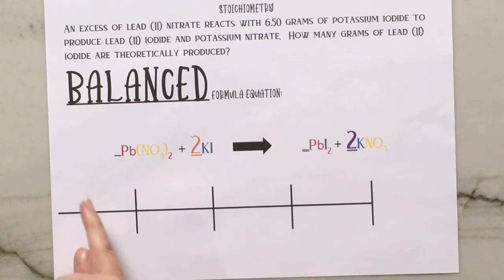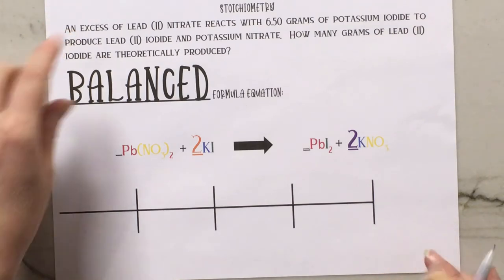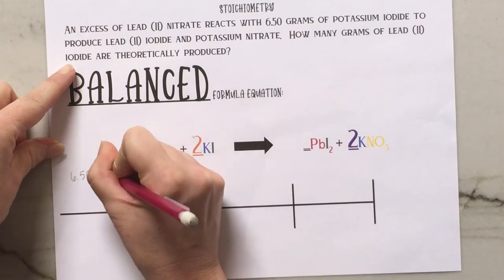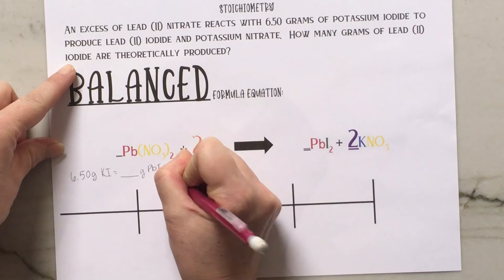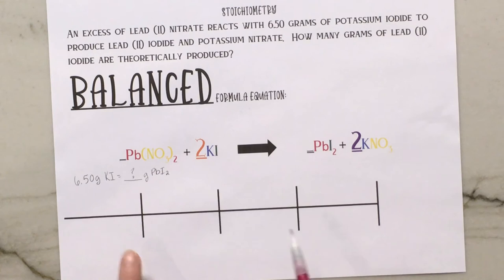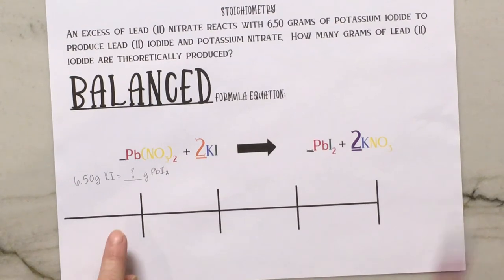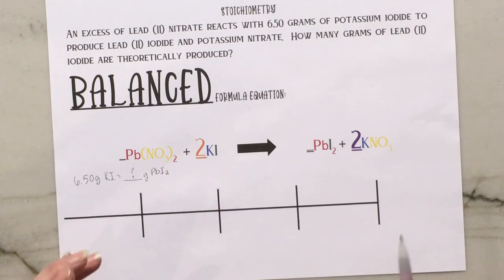Before we get to the bridge method, let's rewrite this in a way that may be easier to understand. We have 6.50 grams of potassium iodide and we want to know how many grams of lead 2 iodide we are producing. So we're moving from grams of one compound to grams of a different compound. We have a balanced equation, which is incredibly important, and you'll see why. I'm going to show you the dimensional analysis part first, then go back and fill in the numbers — if you understand what is happening, you'll be able to work any of these problems rather than just memorizing steps.